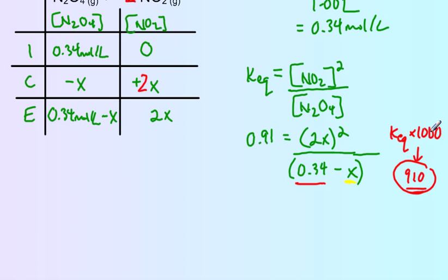Since KEQ times 1,000 is very big compared to our initial concentration, we have to solve for x the old-fashioned way. So 0.91 times 0.34 minus x equals 2x all squared.